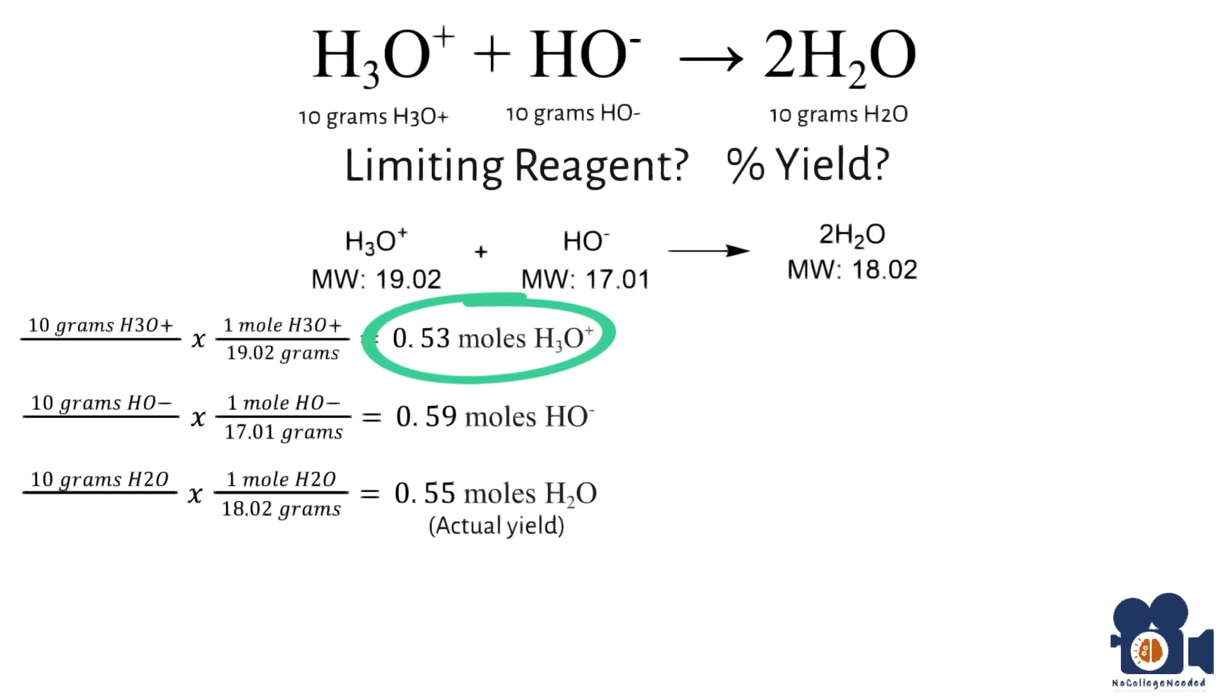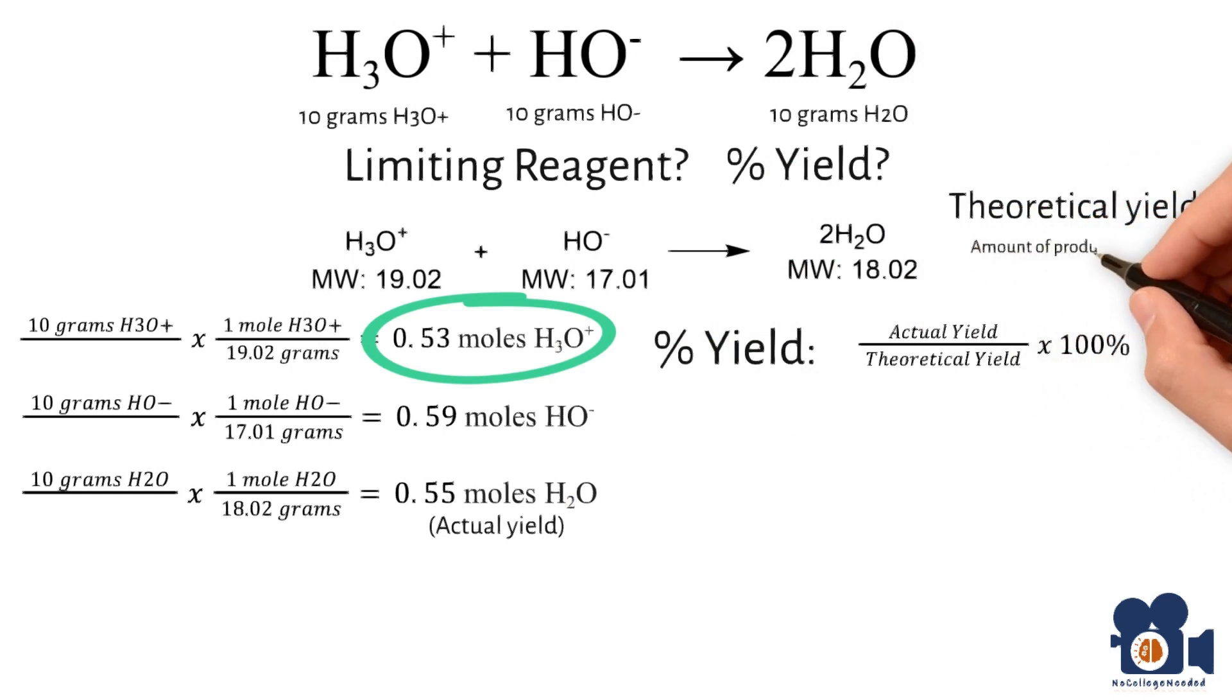Next up is the percent yield calculation. Remember, the theoretical yield is the maximum yield you can get based on your limiting reagent, so 0.53. But remember, it is a 1 to 1 to 2 reaction, so you must multiply that theoretical yield by 2 to account for the equivalents.